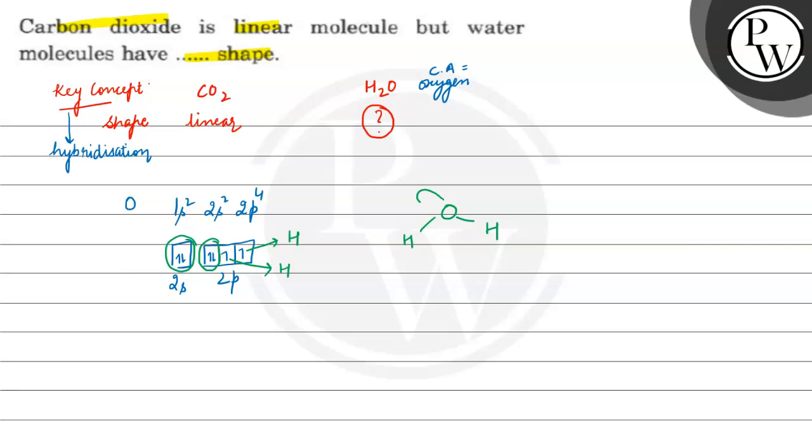And these are the lone pairs, the molecule would look like this because of the repulsion taking place.